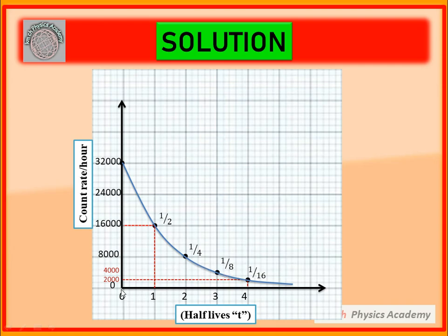On the Y-axis we have count rate. We mark values: 0, 8,000, 16,000, 24,000, and 32,000. On the X-axis we mark half-lives. After one half-life, 32,000 reduces to 16,000. After the second half-life, 16,000 reduces to 8,000. After the third half-life, 8,000 reduces to 4,000. After the fourth half-life, 4,000 reduces to 2,000. So at 1/2, 1/4, 1/8, and 1/16 stages are marked. This way we have shown on the graph how the count rate decreased from 32,000 to one over sixteen of 32,000, i.e., 2,000.